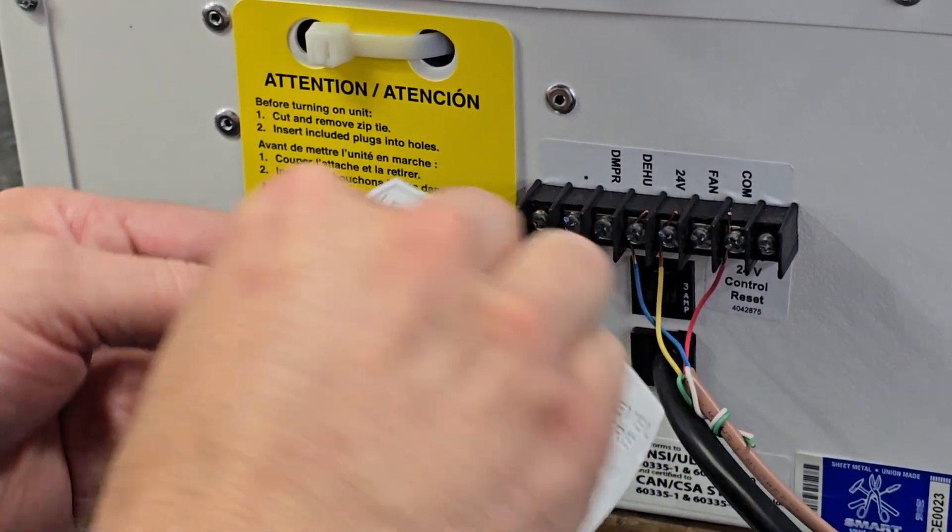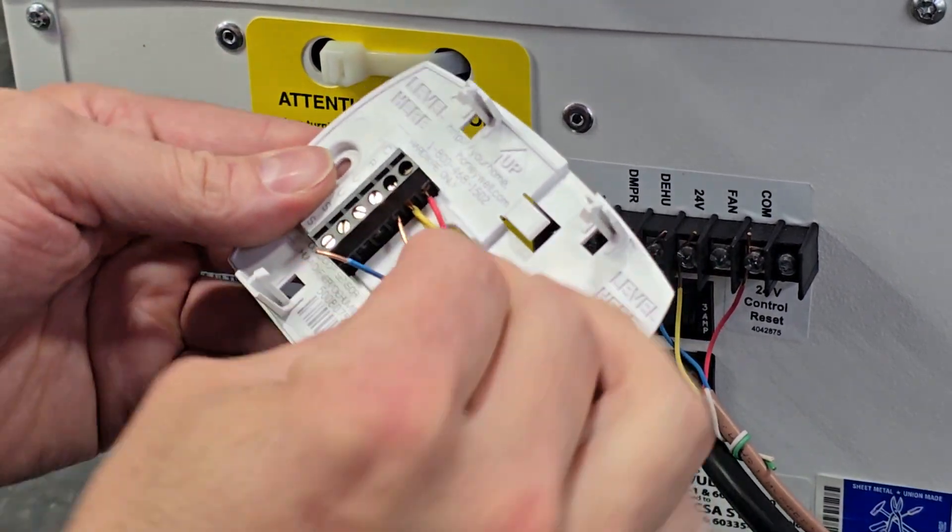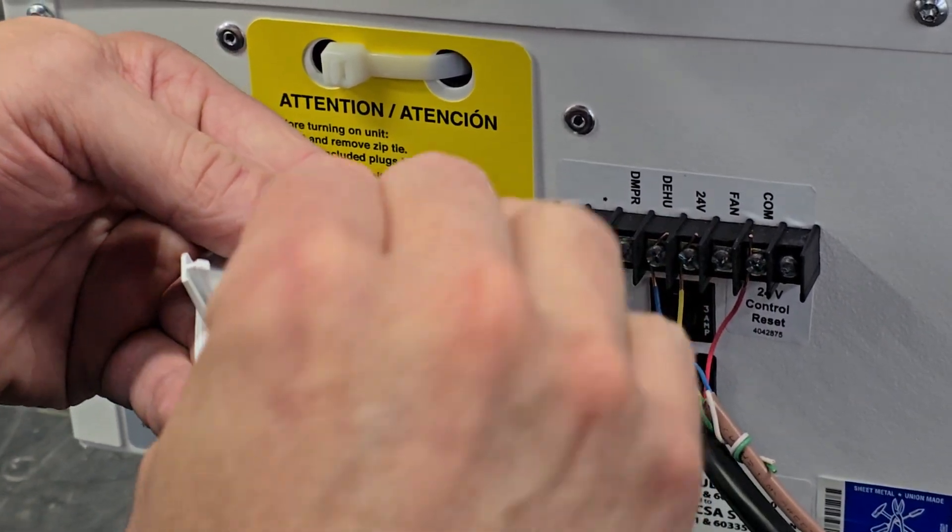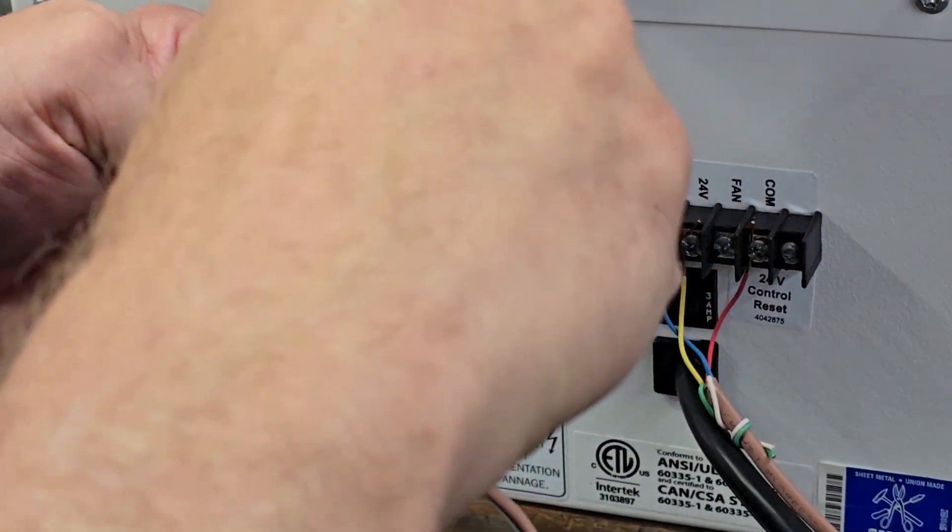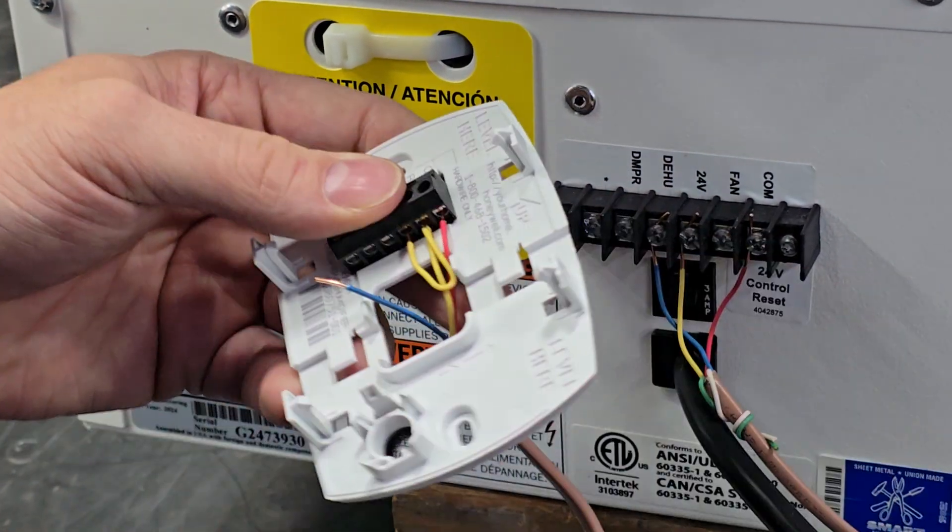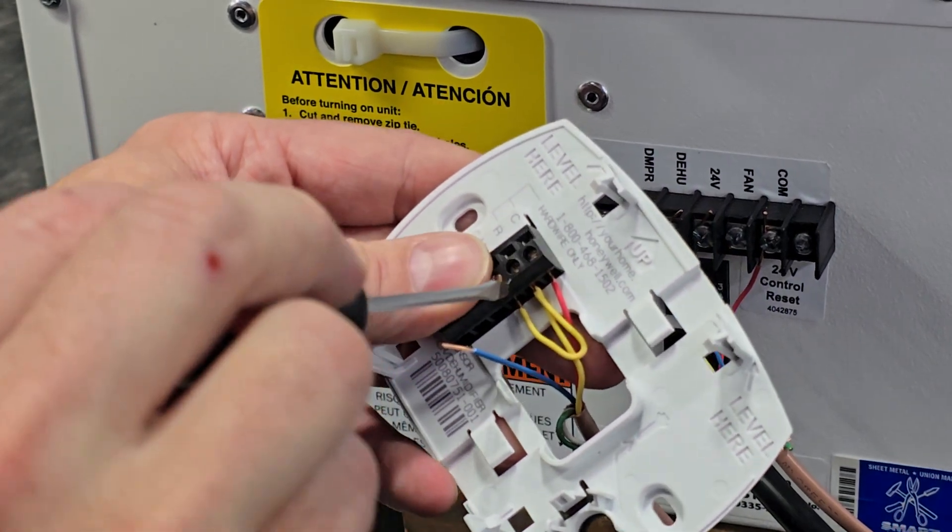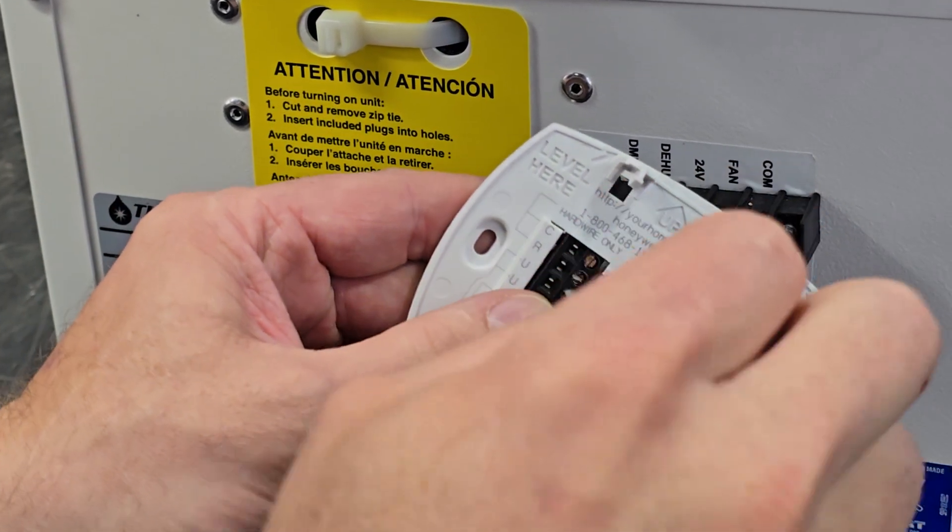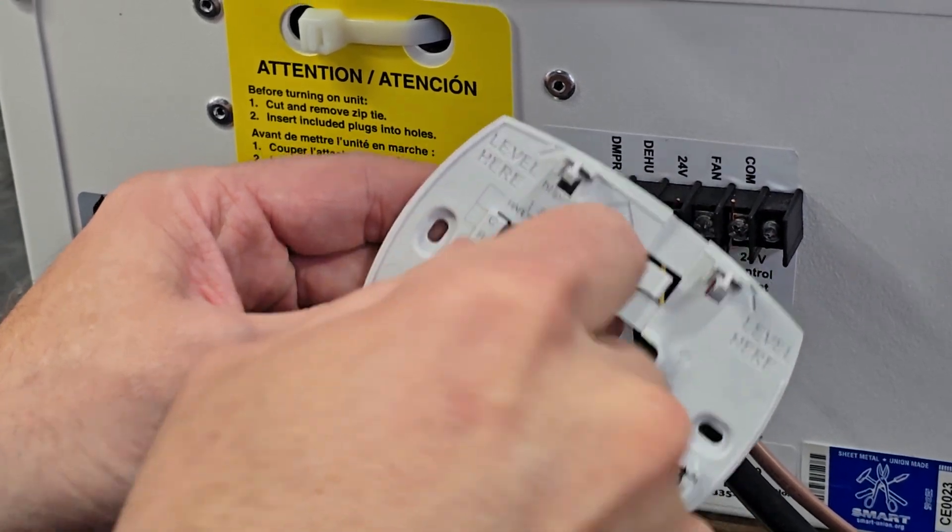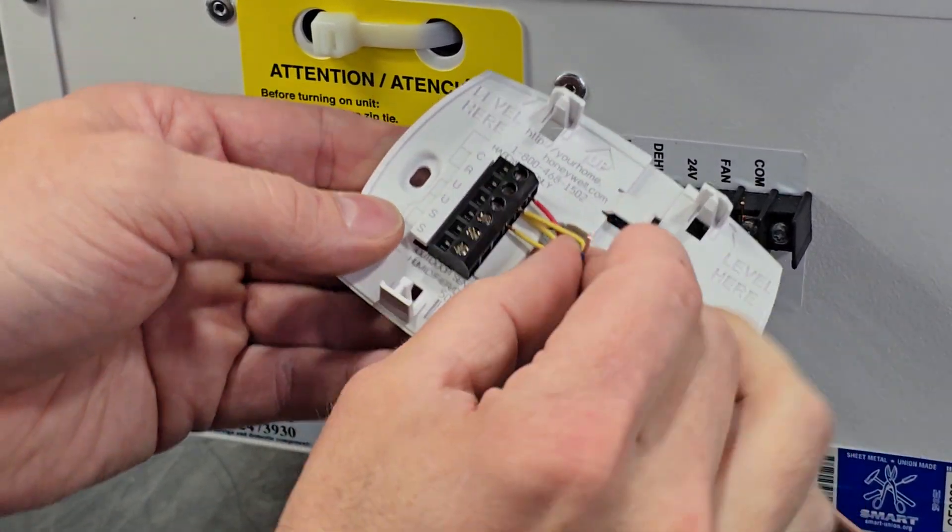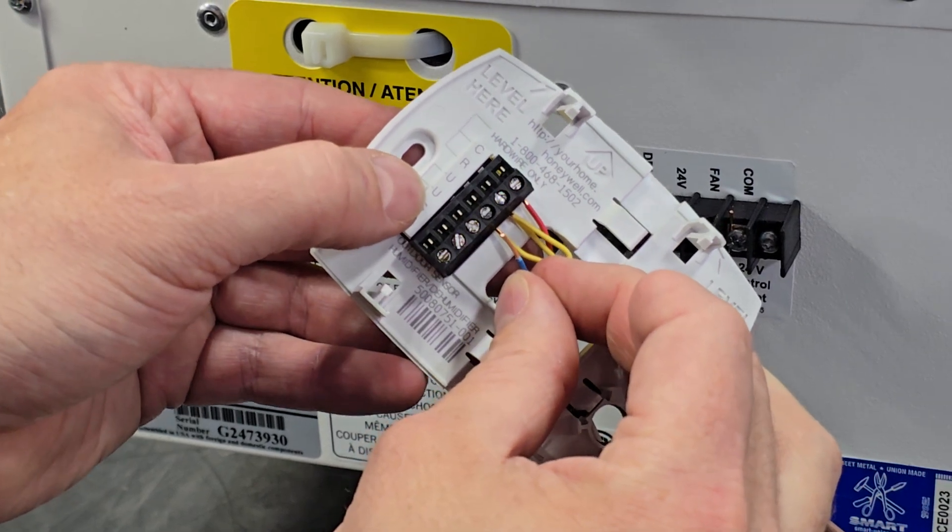The other side of the jumper wire will go to the U terminal, the top U terminal. There's two U terminals. And then lastly the blue wire will go to the bottom U terminal.